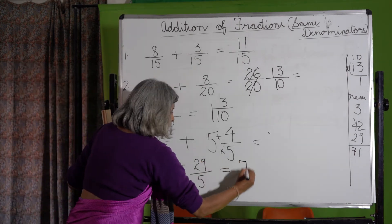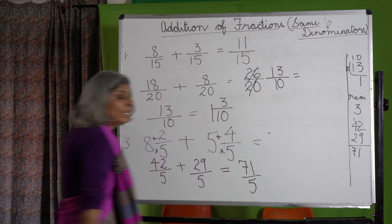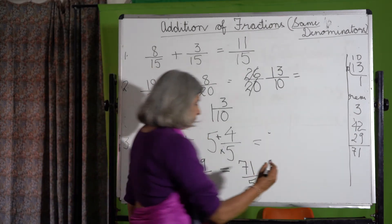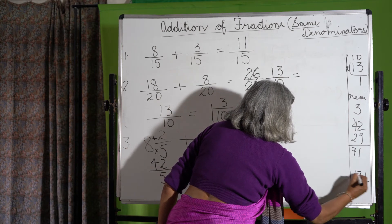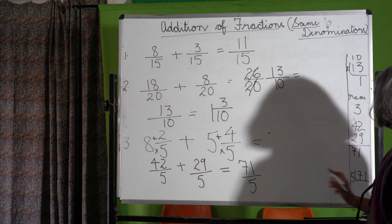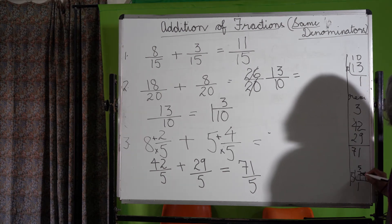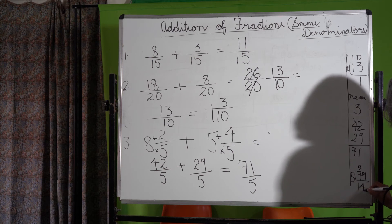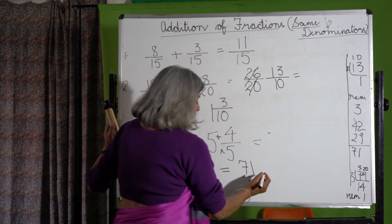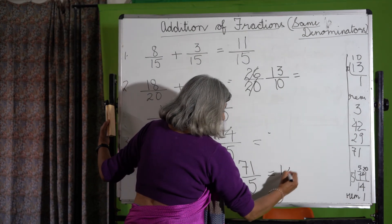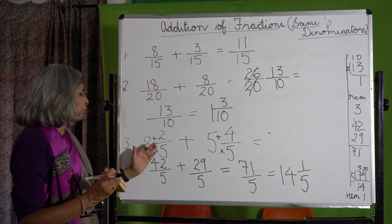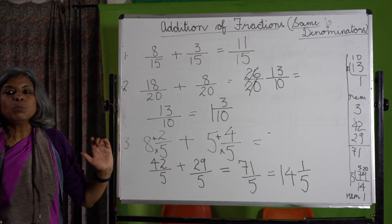So it is 71 upon 5. Now we do not leave the sum as an improper fraction, so we change it into a mixed number. 71 divided by 5: 5 ones are 5, 7 minus 5 is 2, so 71 upon 5 is 14 and 1 upon 5. So the answer to 8 and 2 upon 5 plus 5 and 4 upon 5 is 14 and 1 upon 5.